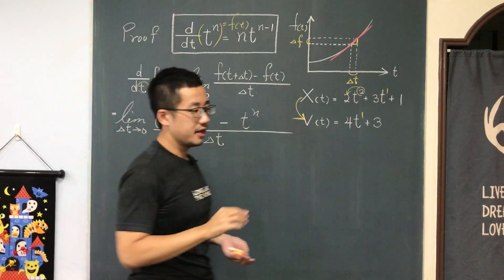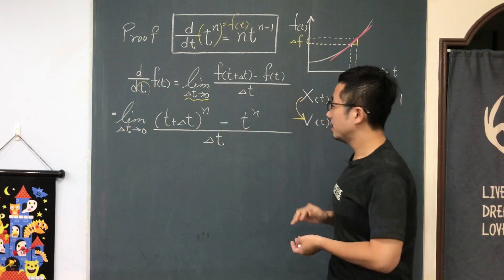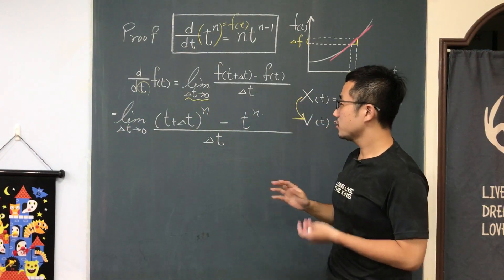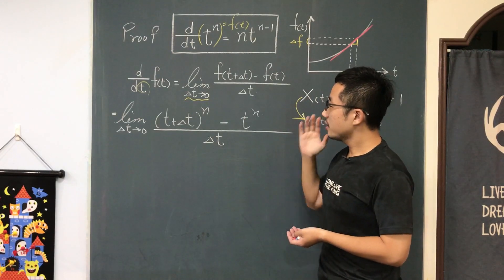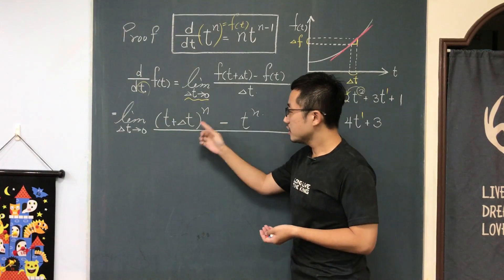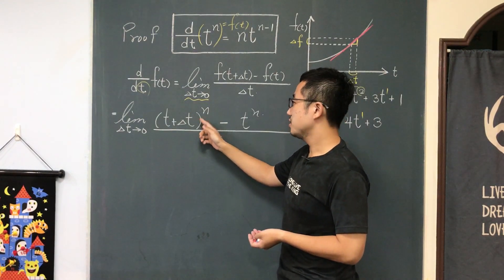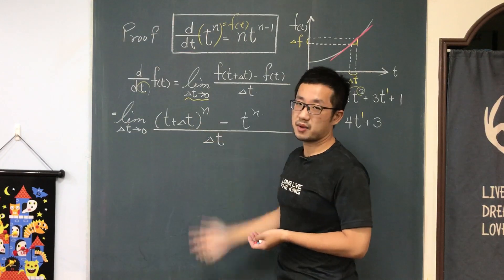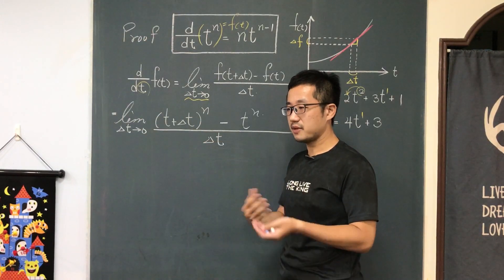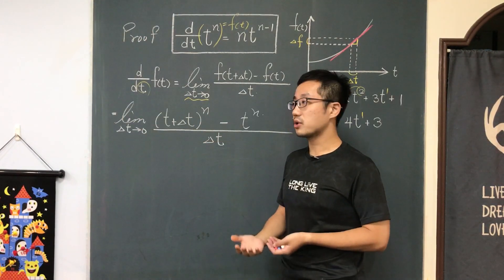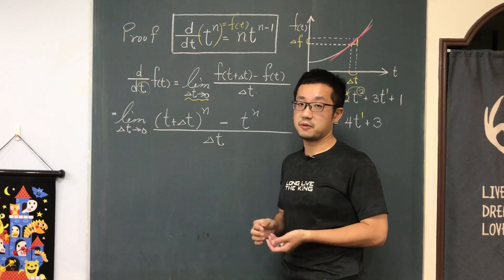The next step is to expand the term (t + Δt) to the nth power by a mathematical tool called the binomial theorem.